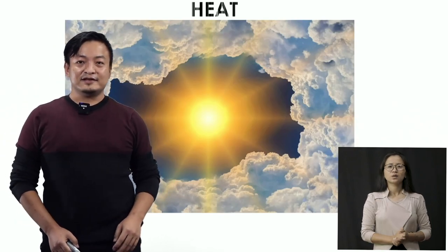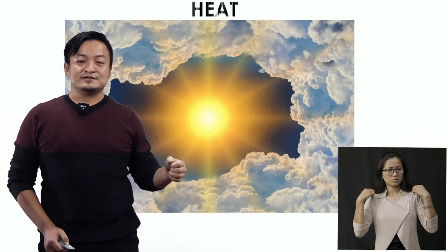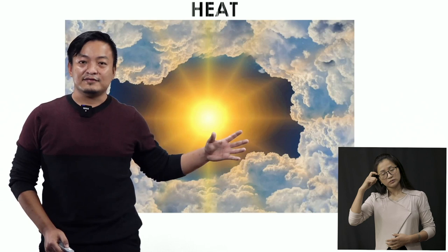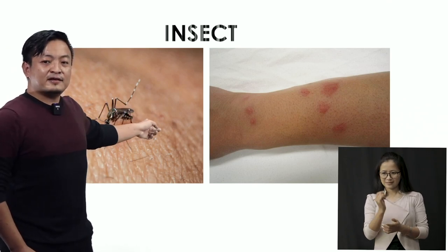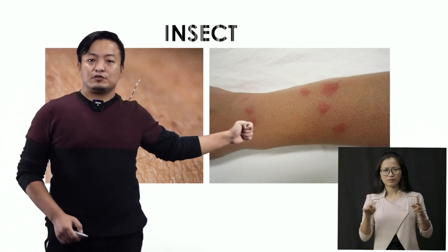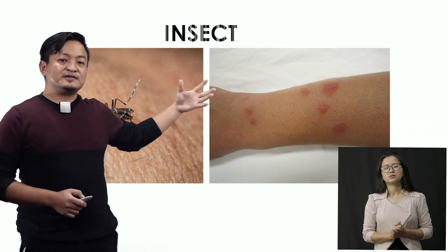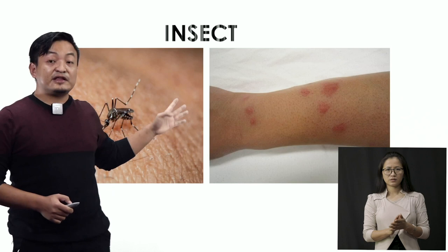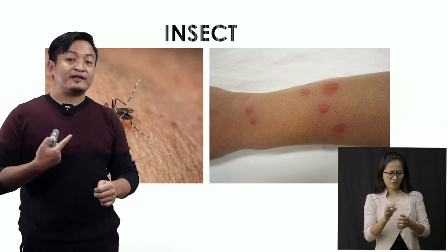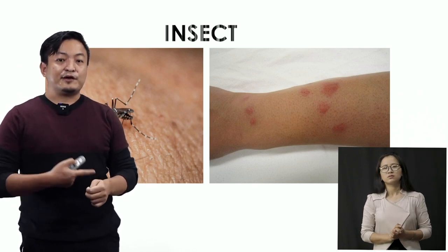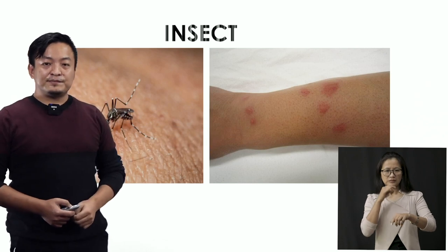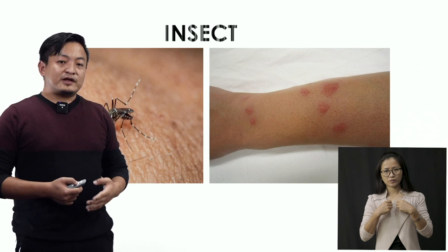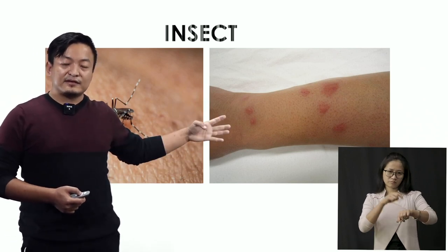Here we can see sunshine, and from the sun we get heat, so clothes protect us from the heat of the sun. Now here we can see an insect, and through insect bites we get rashes on the skin. These insects attack our skin and bite us, causing rashes. So we have to wear clothes so that insects do not attack our skin.